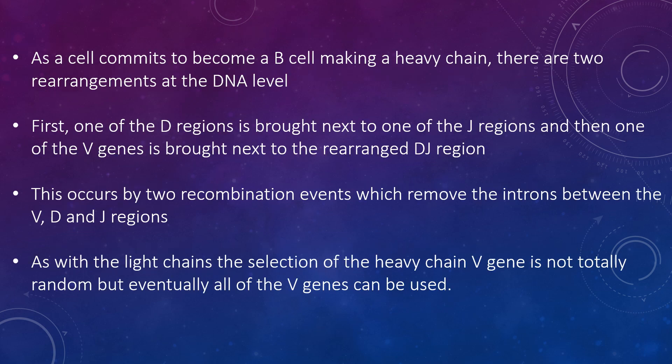When a cell commits to becoming a B-cell making a heavy chain, rearrangements occur at the DNA level. First, one of the D-regions is brought next to one of the J-regions, and then one of the V-regions is brought next to the D-J region. This occurs by two recombination events that remove the introns between the V, D, and J gene regions. As with the light chains, the selection of the heavy chain V-gene is not totally random, but eventually all V-genes can be used.